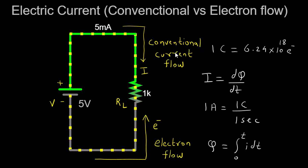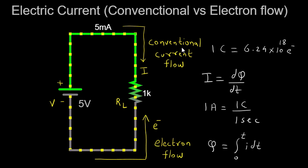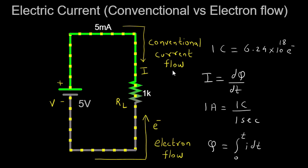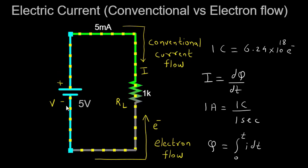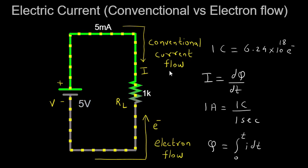In the early days of studying electricity, scientists established a convention for the direction of current flow, known as conventional current. According to this convention, current flows from the positive terminal of a battery or power source to the negative terminal. It was initially believed that positive charges were responsible for the flow of current, hence the chosen direction of conventional current.